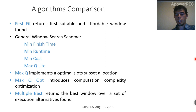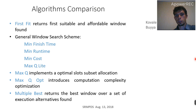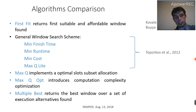For algorithm comparison, we consider and implement the following algorithms. First is a first-fit algorithm which considers the heterogeneous distributed environment but returns just the first suitable and affordable window found. Next is a general window search scheme which performs optimal allocations for some predefined but common criteria: finish time minimization, run time minimization, cost minimization, and so on.